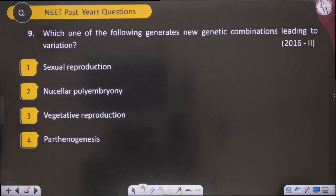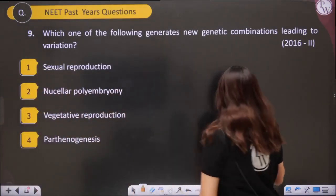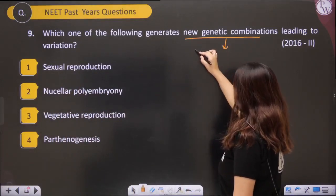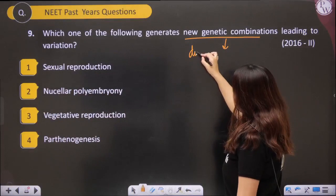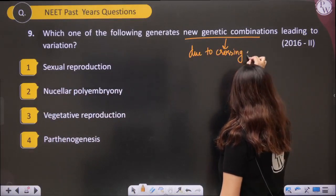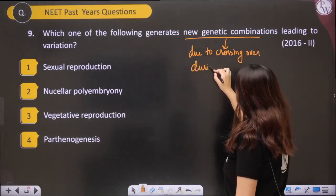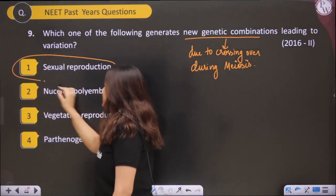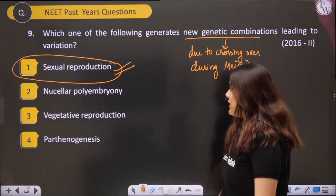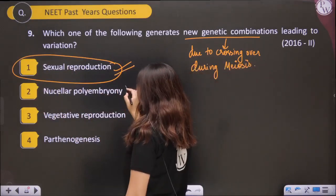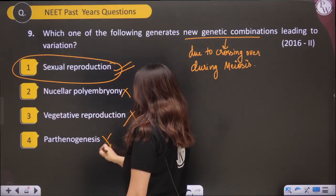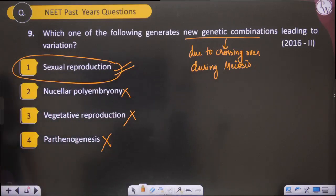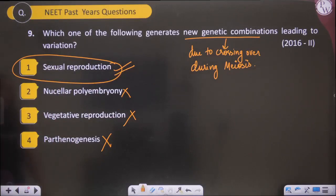Next: which one of the following generates new genetic combinations? New genetic combinations come from variation, and variation comes due to crossing over during meiosis. Meiosis occurs in sexual reproduction — not in nucellular polyembryony, not in vegetative propagation, and not in parthenogenesis. So new genetic combinations are formed due to meiosis in sexual reproduction.